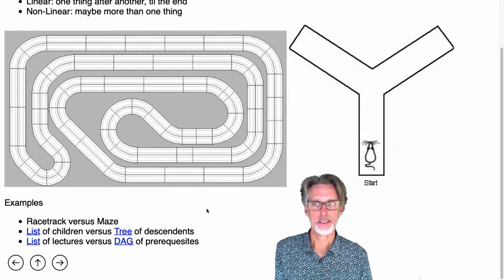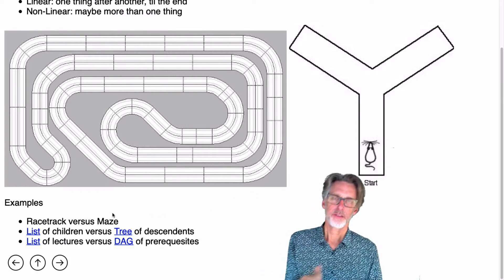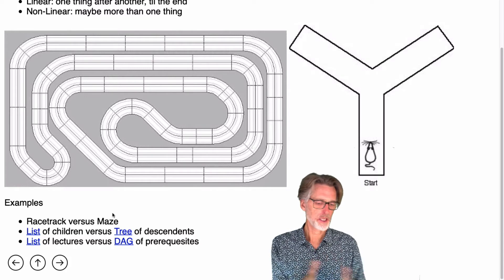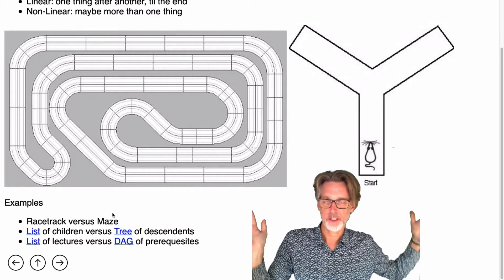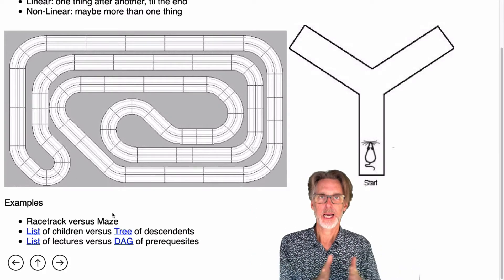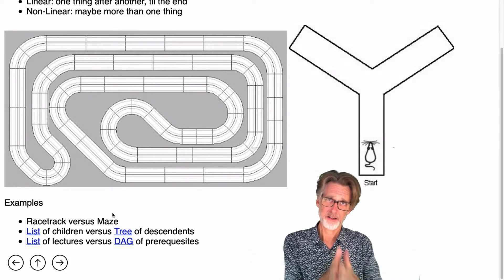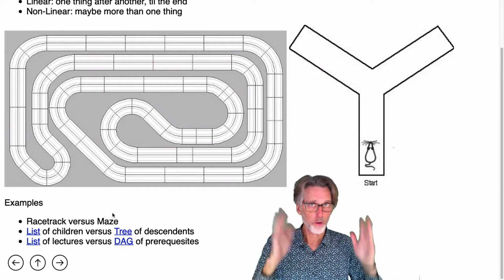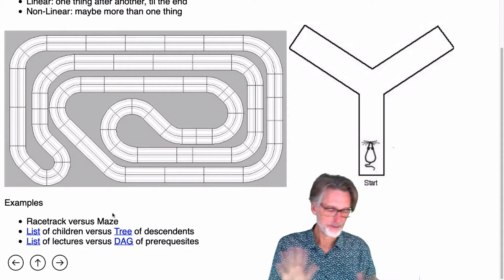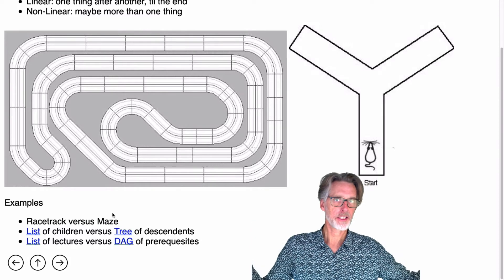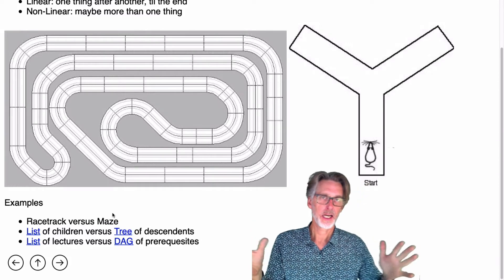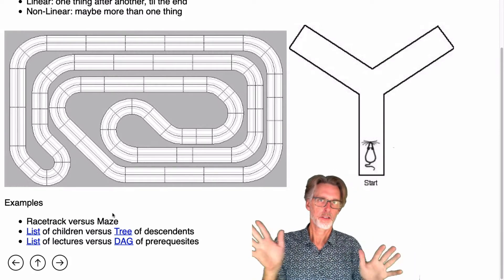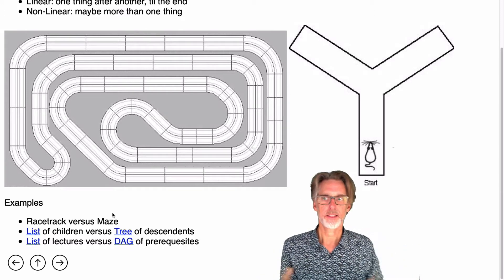Life is complex. You can also think of a list of children. Suppose I have ten children — I have a list of them, and that's a linear structure. But if I'm old or dead, I may have many generations of descendants, and those descendants may have an interesting structure. They're a tree of my descendants.